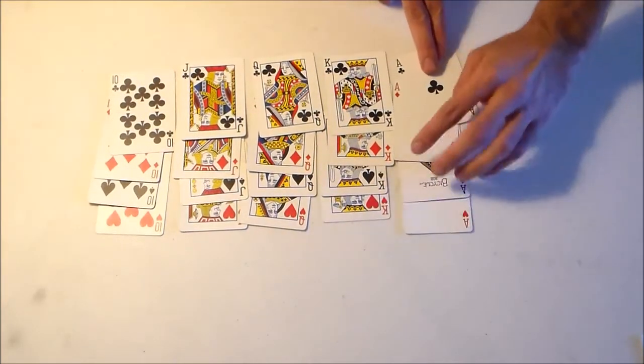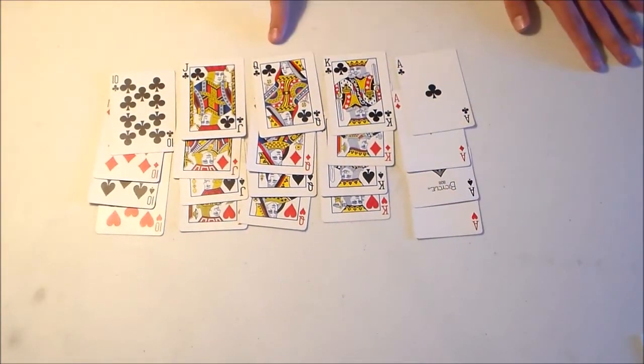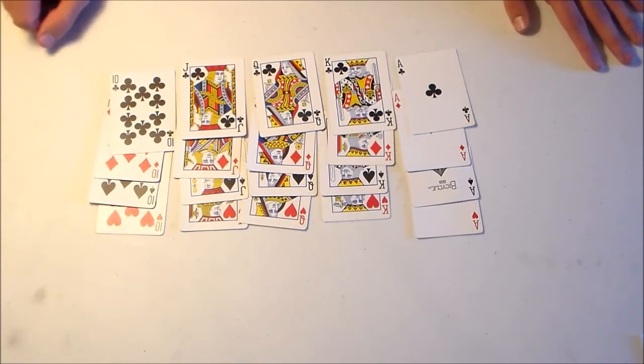Pretty cool, huh? We got all the aces together, all the kings together, all the queens together, all the jacks together, and all the tens together.